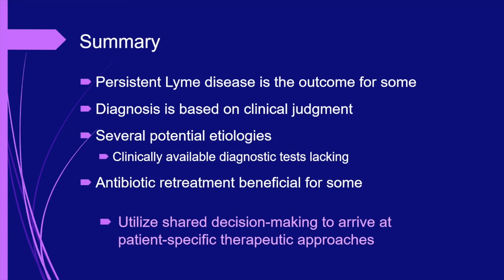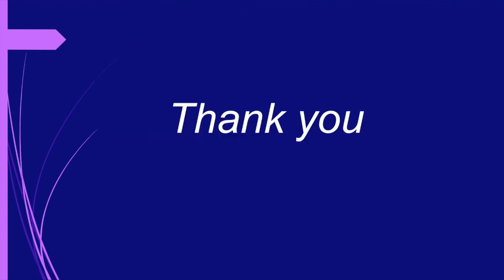To summarize: some patients who are treated for Lyme disease will develop persistent manifestations of the illness. The diagnosis of persistent Lyme disease is based on clinical judgment that weighs historical, exam, and diagnostic evidence. There are several potential pathophysiologic mechanisms, but we lack readily available diagnostic testing. Antibiotic retreatment aimed at eliminating a persistent B. burgdorferi infection has been beneficial for some. Given the significant scientific uncertainties, clinicians and patients should utilize shared decision-making to arrive at patient-specific therapeutic programs. Thank you for participating in the CME activity, Persistent Lyme Disease.